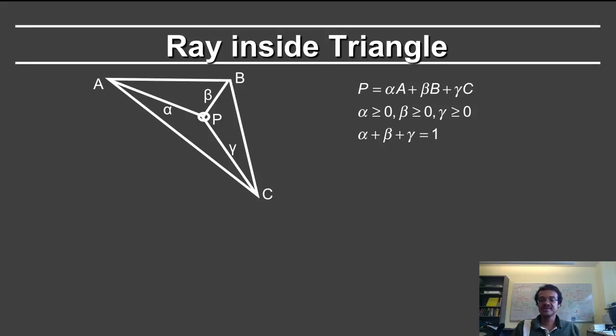It's simply a system of simultaneous equations. So I can subtract A from P, and I can get beta into B minus A plus gamma into C minus A. What I've done in order to do this is as follows. I went here and I subtracted A, but remember that alpha plus beta plus gamma is equal to 1.